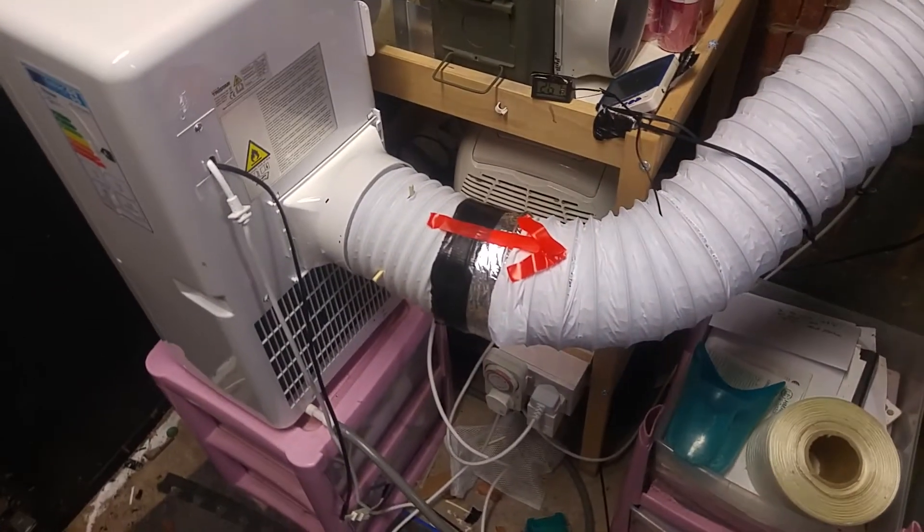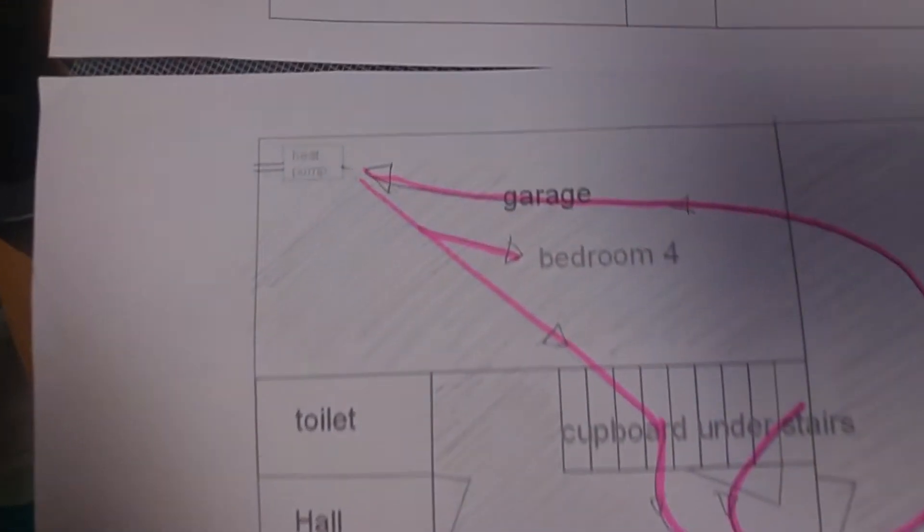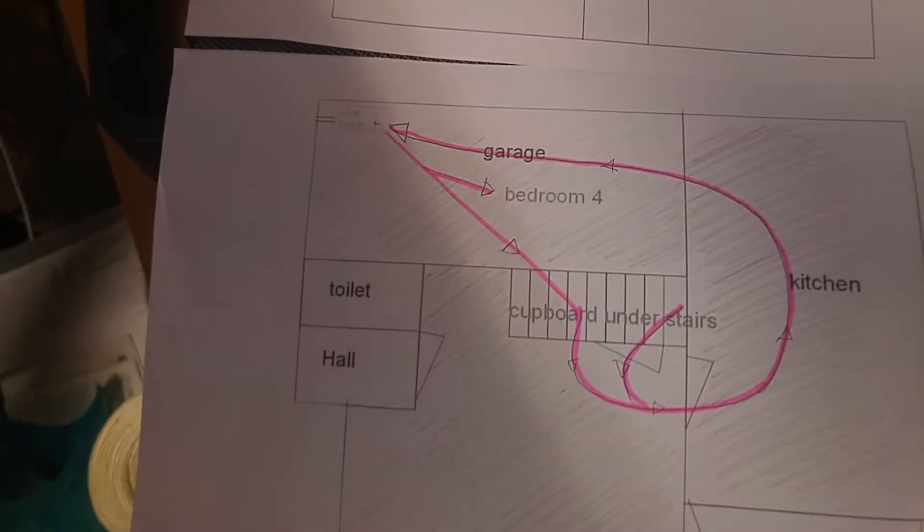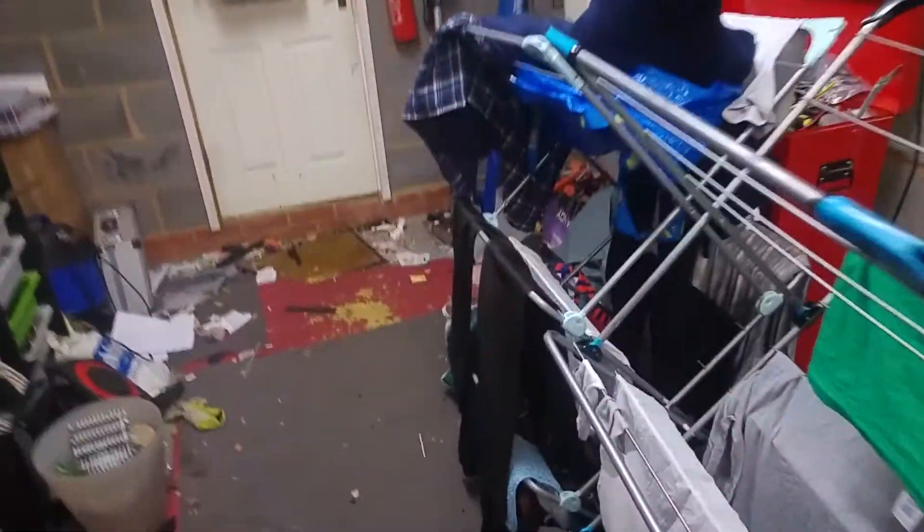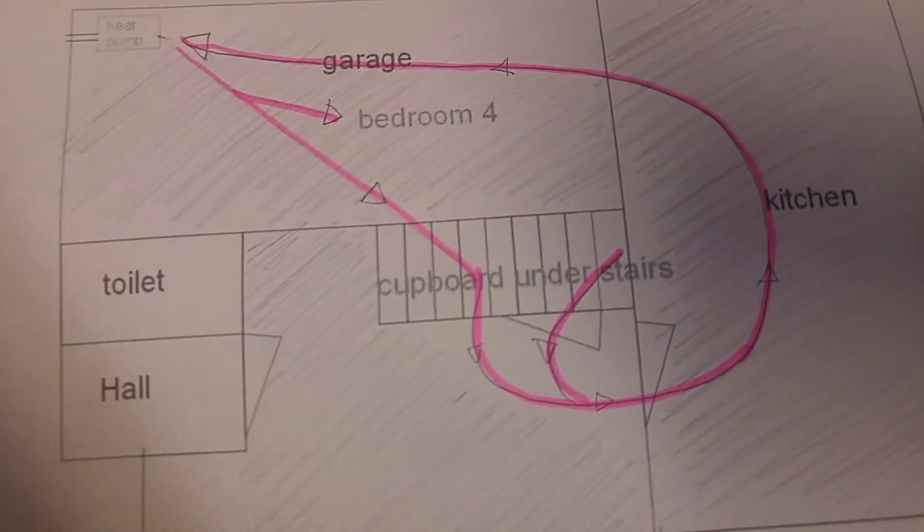Then you need to duct the air around your house and I've chosen to put mine in the garage, which is that room there, which is this room here in fact. And then the duct goes through to a cupboard in the lounge, which is that cupboard there under the stairs.